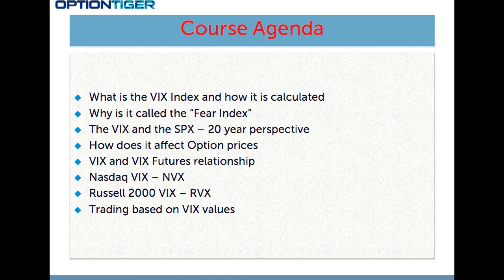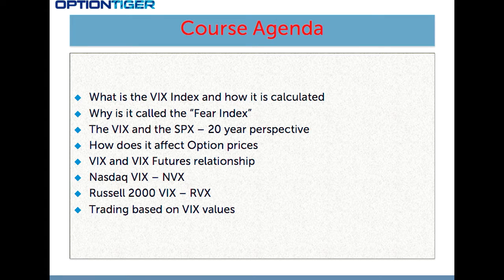The VIX index is called the fear index, and we'll be looking at why this is the case. In general, the VIX index gives an important sentiment indicator to all participants in the market, and that sentiment is the sentiment of fear. So a high level of VIX means there is a high level of fear in the market, and the converse is also true. The VIX came into being in the early 90s, around 1992-1993.